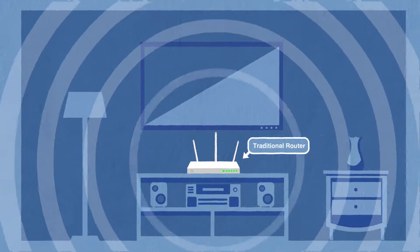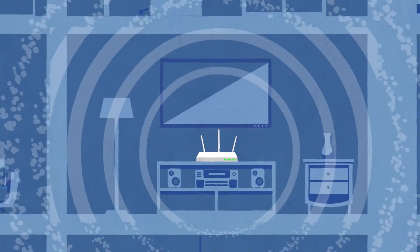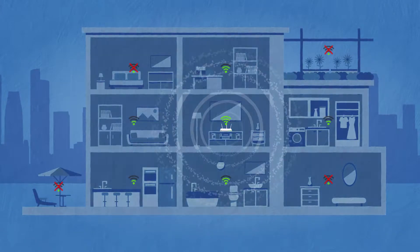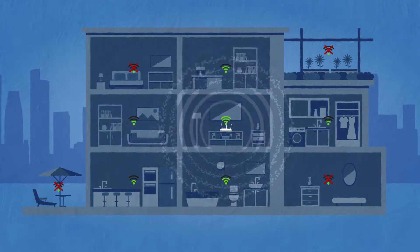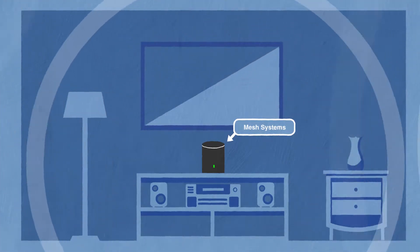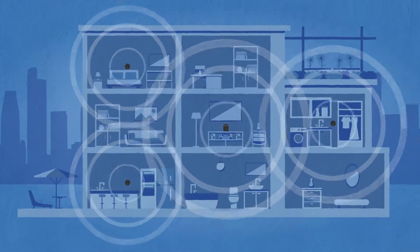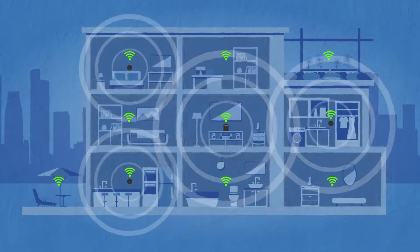The traditional routers you're used to transmit their signal from one single access point. The signal deteriorates as it gets further from the source and passes through walls. Mesh systems share a steady connection across multiple access points that can cover huge multi-story spaces across walls and other obstacles.